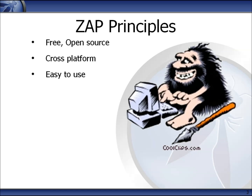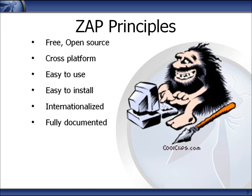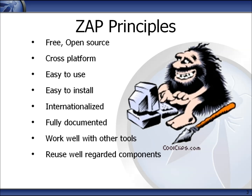Ease of use is a priority, which I think is important for experts as well as beginners. It's also easy to install — it requires Java to run, but everything else is included in the standard downloads. It is fully internationalised, and has been translated into a dozen other languages. A full set of help files is included, and these can also be viewed on the web. It works well with other tools, so you can use more specialised tools in conjunction with ZAP if you need to. Wherever possible, we try to reuse other well-regarded components, only implementing new functionality ourselves if there are no other good alternatives. Community involvement is actively encouraged — ZAP is a community project, and we try to make it as easy as possible for new people to get involved and contribute.